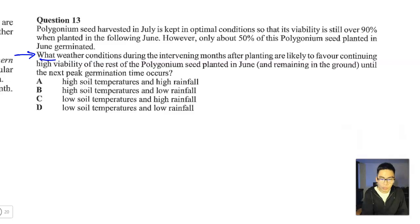Let's keep on going. What weather conditions during the intervening months after planting are likely to favour continuing high viability of the rest of the Polygonum seed planted in June and remaining in the ground until the next peak germination time occurs? And we can see from the answer options that they're talking about high or low soil temperatures and high or low rainfall. Let's go back to the question and break it down further.